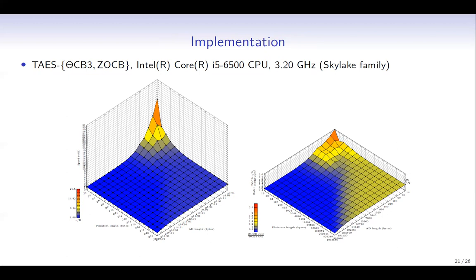This graph shows the ratio of speed between ZO-CB and ThetaCB3. The blue area shows the region where ZO-CB is faster than ThetaCB3. We see that if the input length is long and the plaintext length is longer than the AD length, then ZO-CB performs better than ThetaCB3.